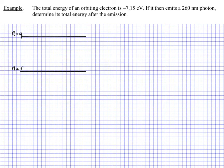For our second example here, we have the total energy of an orbiting electron to be negative 7.15 eV. We're told that it then emits a photon. We need to know the total energy after the emission.